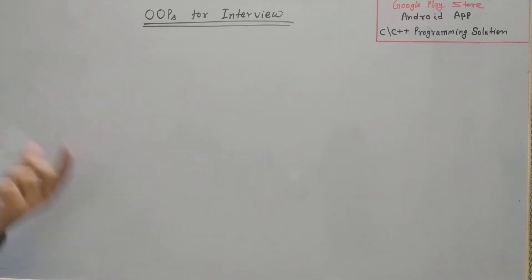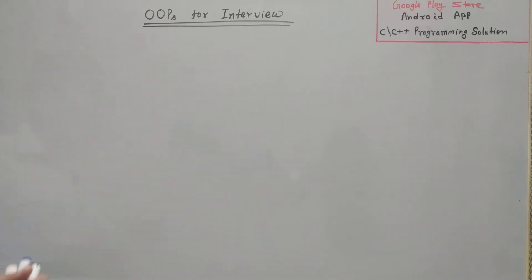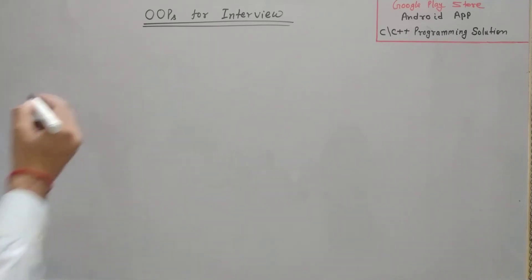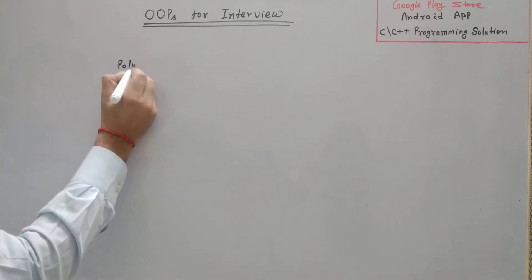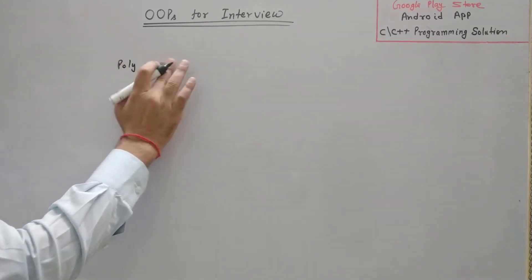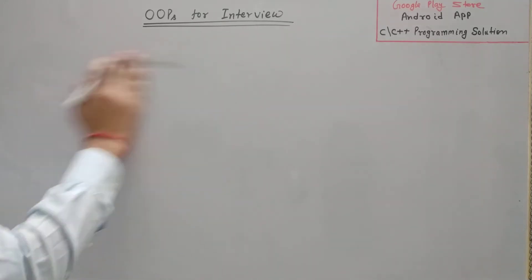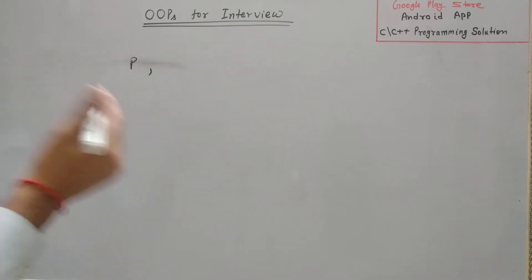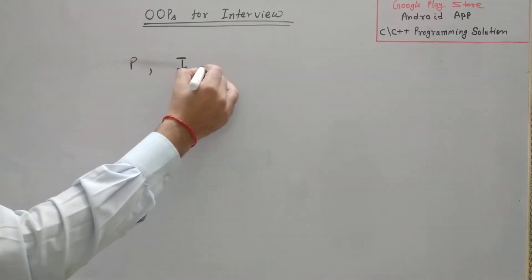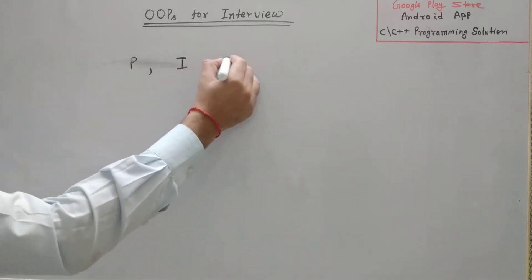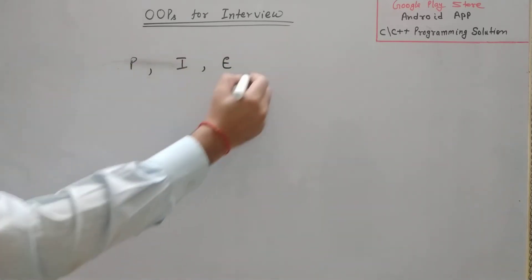The first question: 'What do you know about OOP?' You can say that OOP has the following properties, and you will name them: encapsulation, polymorphism, inheritance, and abstraction.